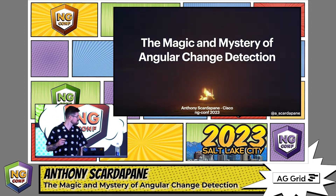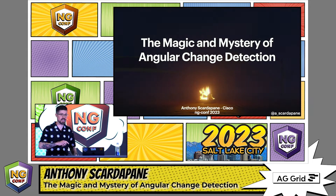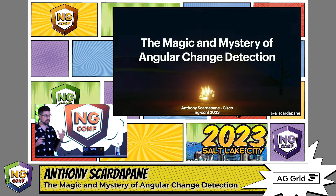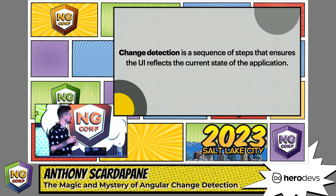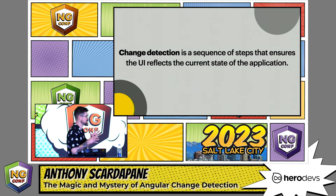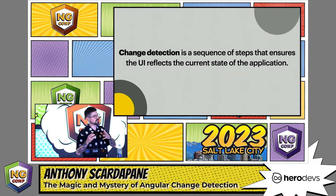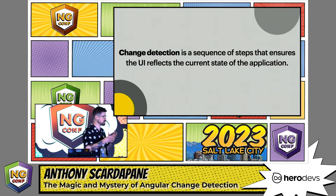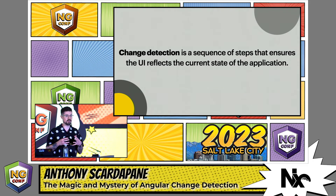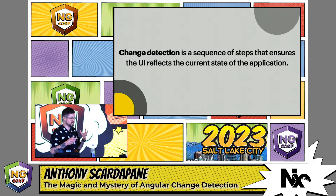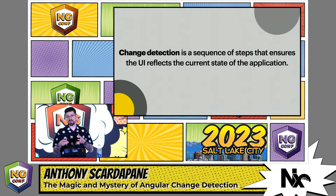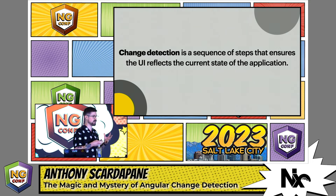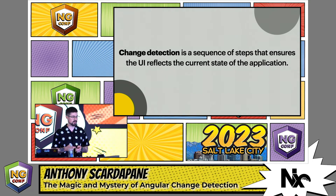I'd like to start off by first defining what change detection means overall, at least to me. Really the job of change detection is to make sure our model, our data model, is in sync with our UI. It's a sequence of steps that Angular performs to make sure that holds true — otherwise we see stuff in the browser that's not reflective of our data model.